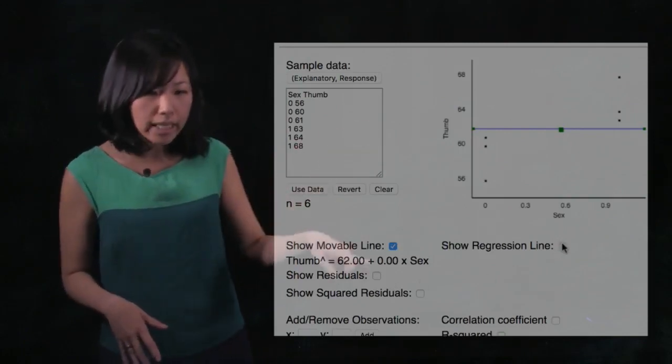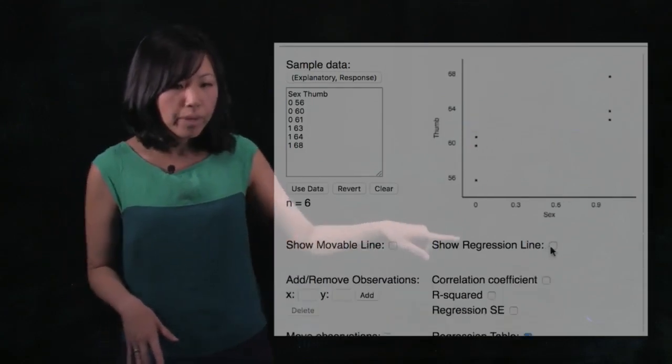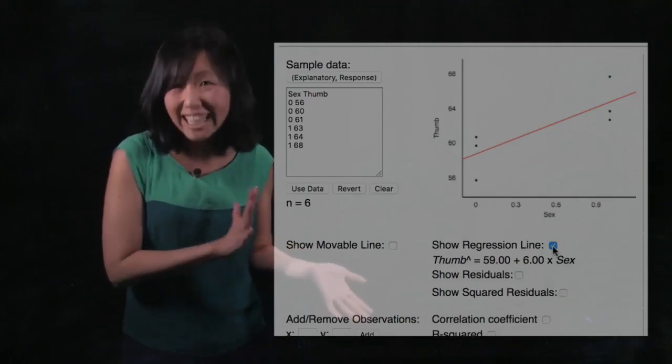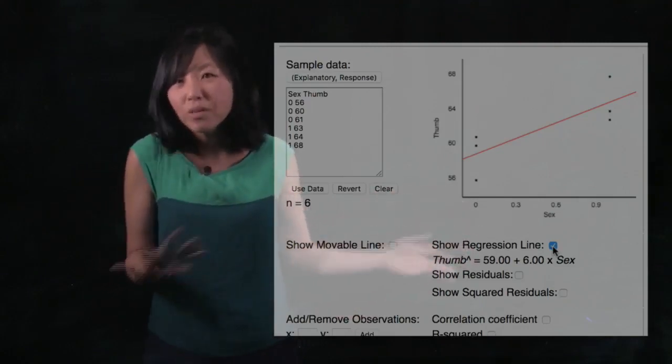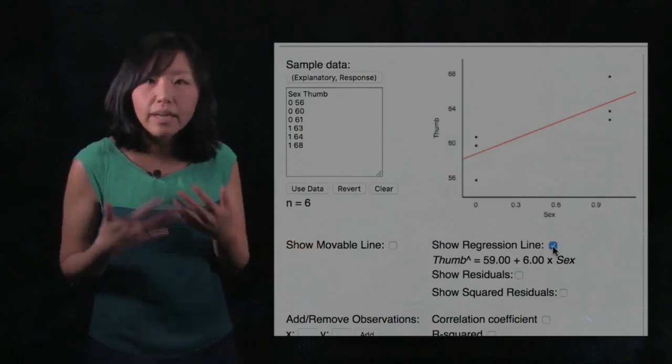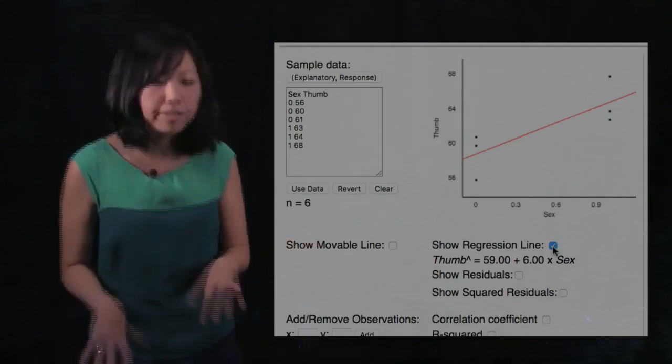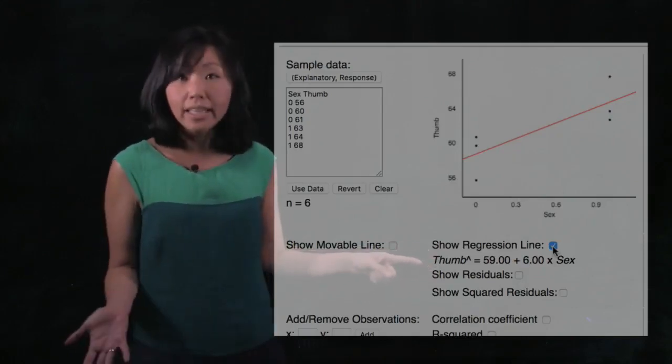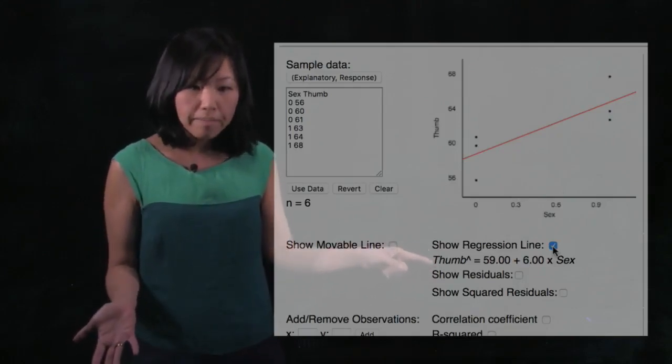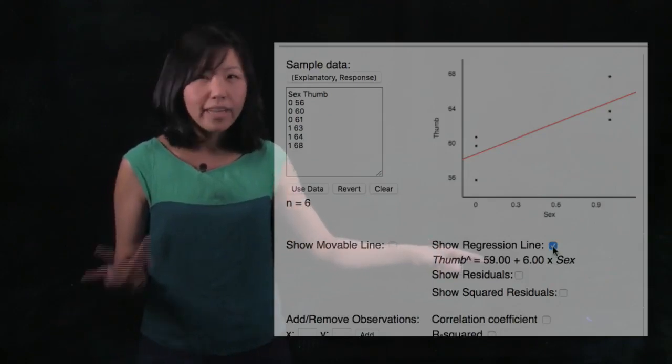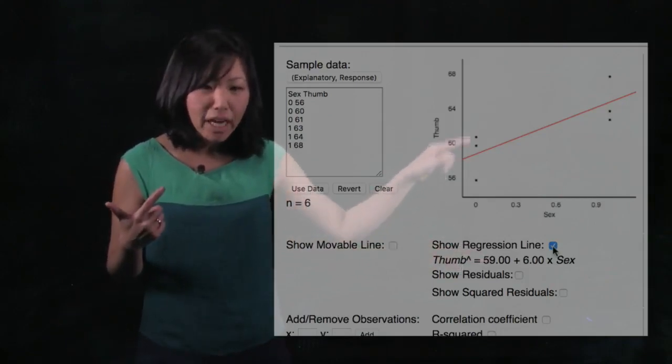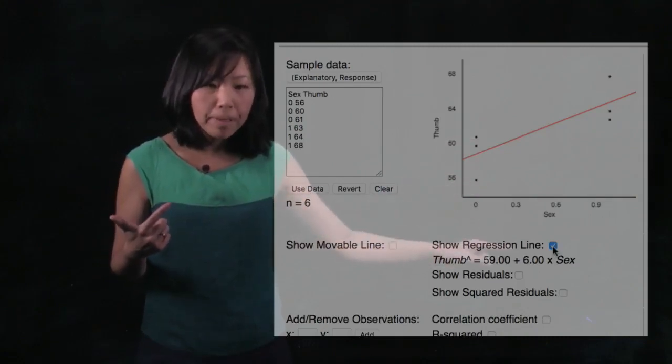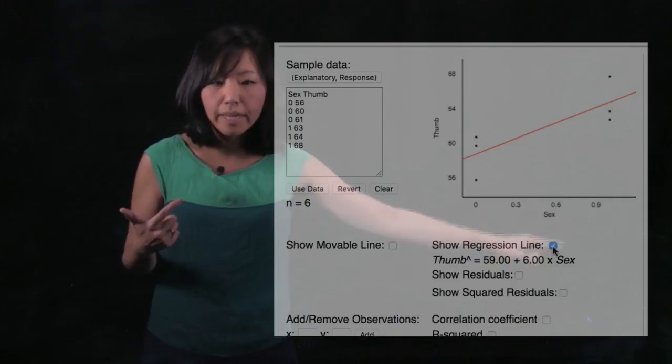And so we're going to unclick this show movable line real quick. And we're going to show you what it looks like in this app. We've actually kind of hacked this app, and so we're going to call it a regression line, but it really, it's a model called sex model. And so we've added in that model here, and you could see it wrote exactly the function for you. Thumb, the thumb length, equals 59, and remember, that's the mean of the females. 59 was the mean of the females, so the female mean plus six times sex.